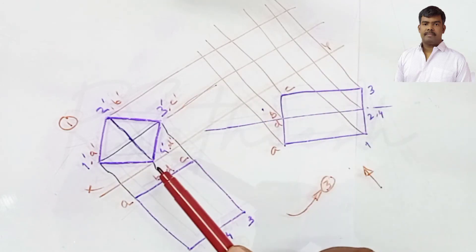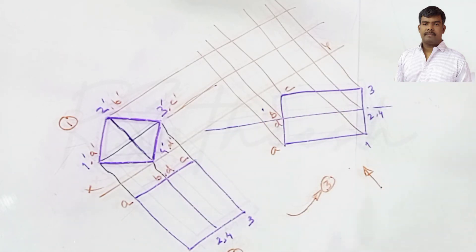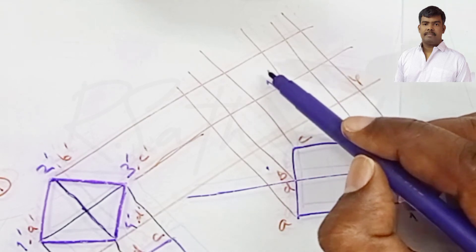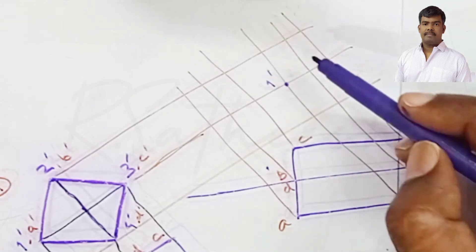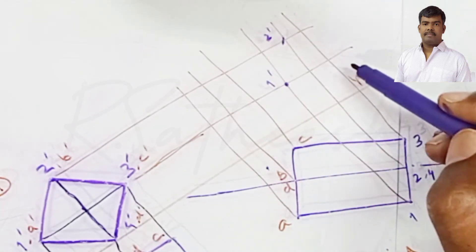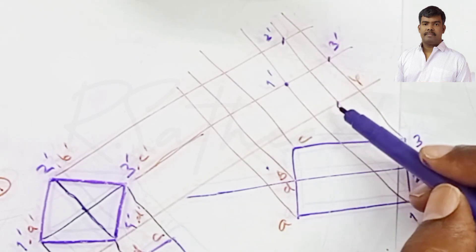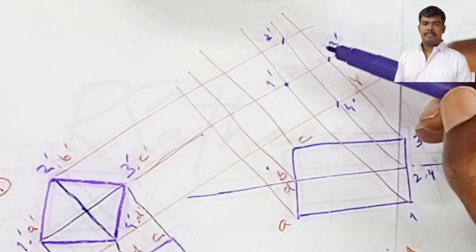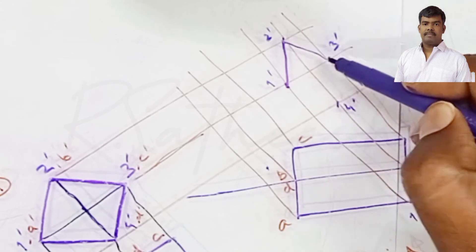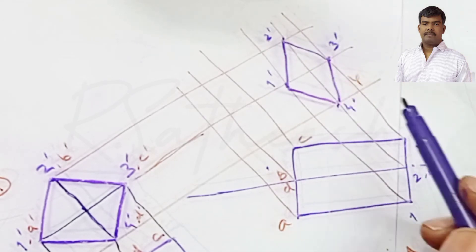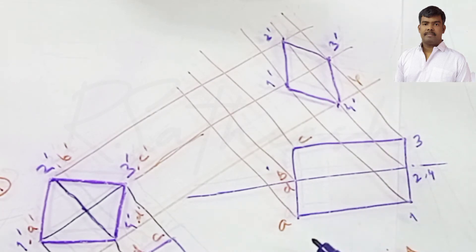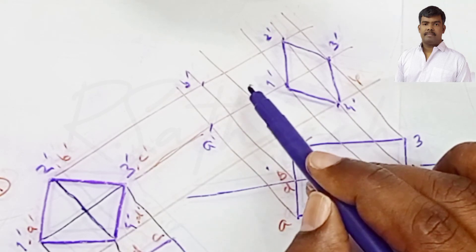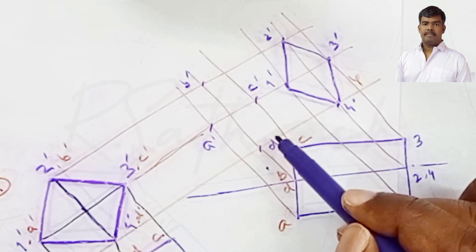Plot the points: 1 dash, 2 dash, 3 dash, 4 dash for the front square. In the front view, the front square 1-2-3-4-1 is completely visible. So lines 1 to 2, 2 to 3, 3 to 4, and 4 to 1 are all visible. Similarly for the rear square: A dash, B dash, C dash, D dash.